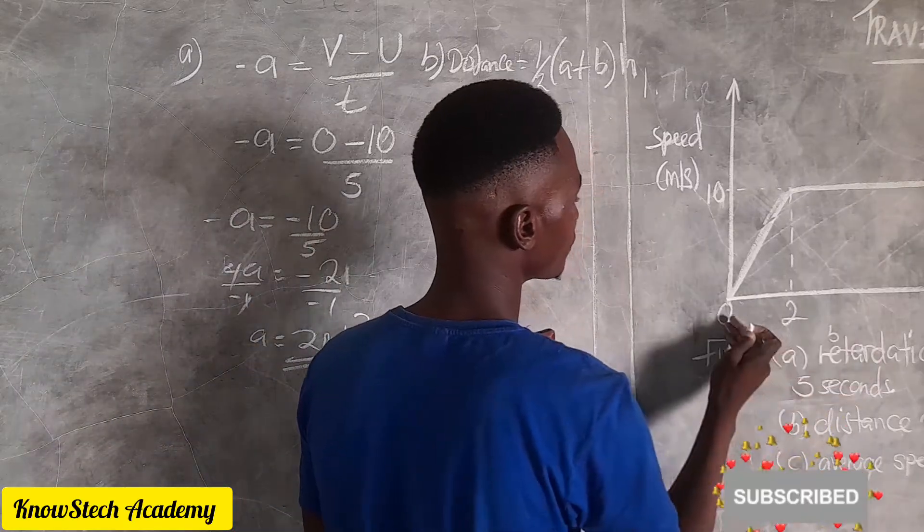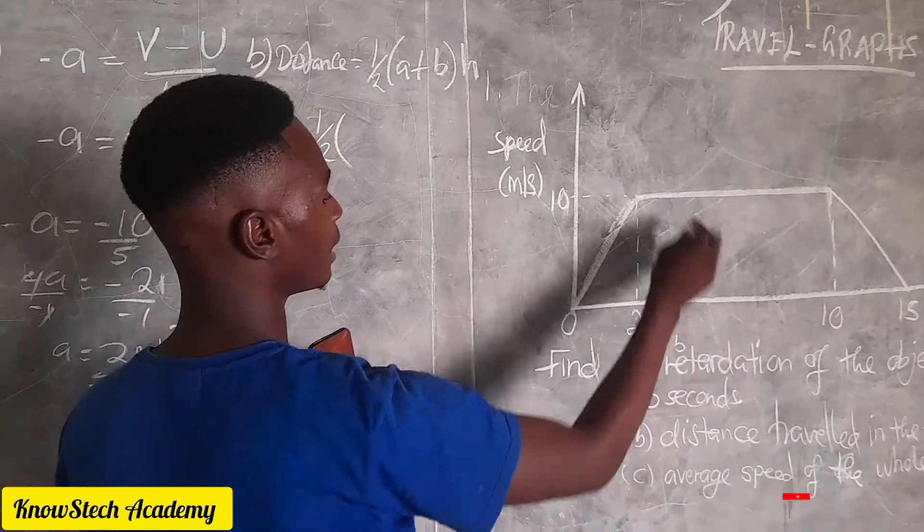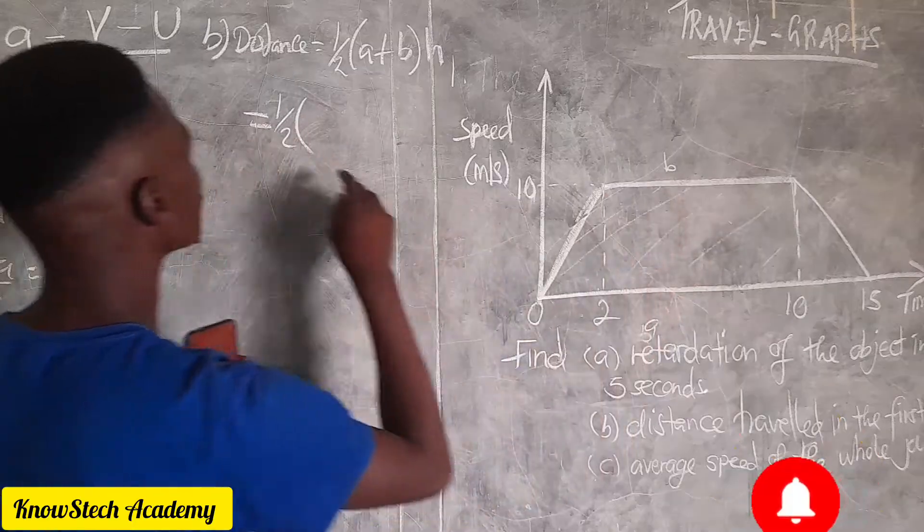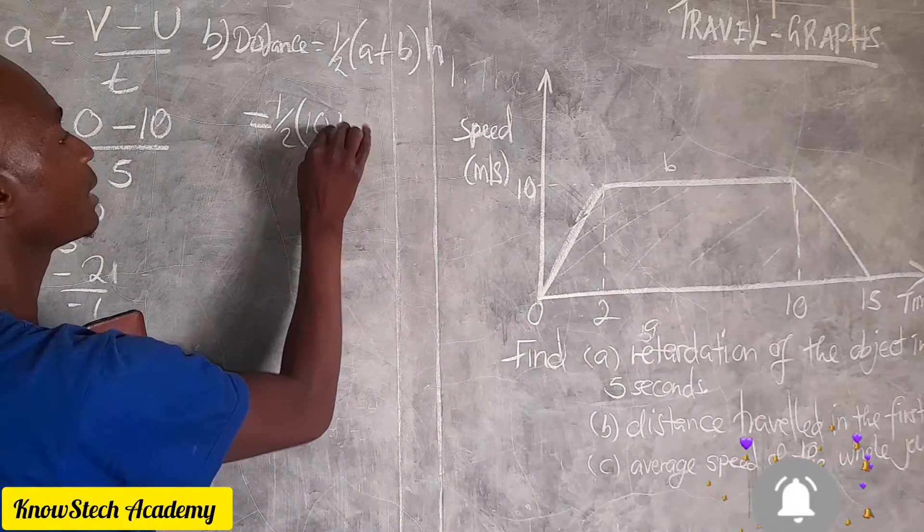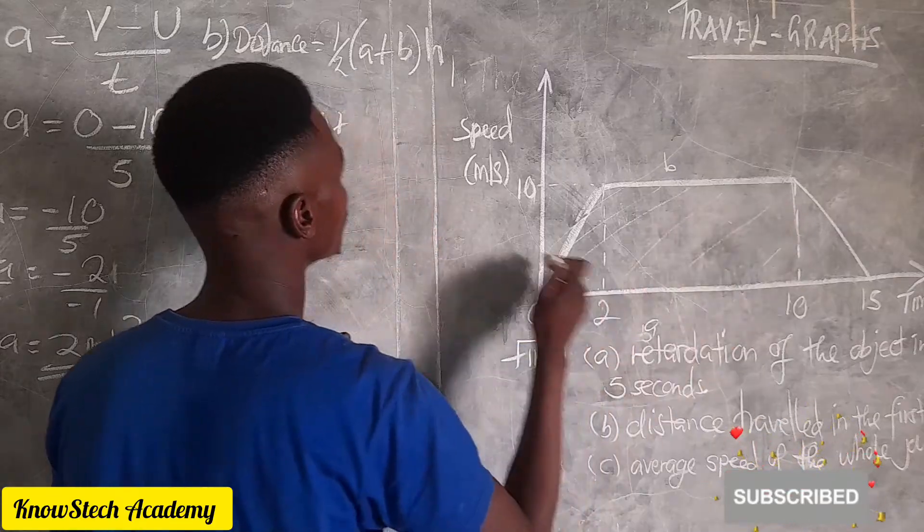Half a is the base from 0 to 10. Let's call this one as our a, and then our b is this top part. So our a is 10, our b is from 2 to 10, which is 10 minus 2 which is 8.